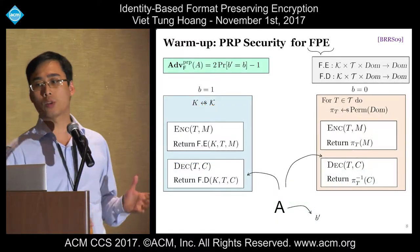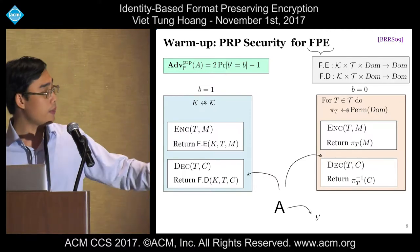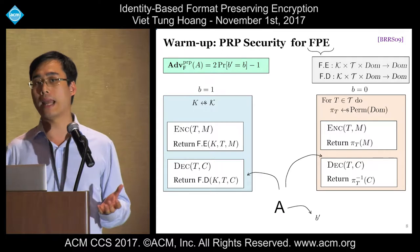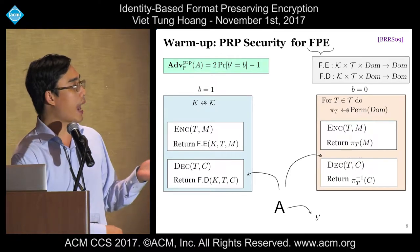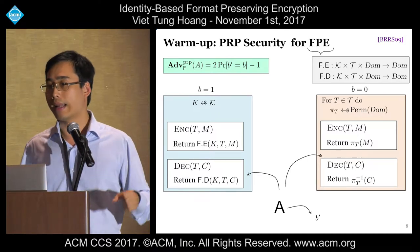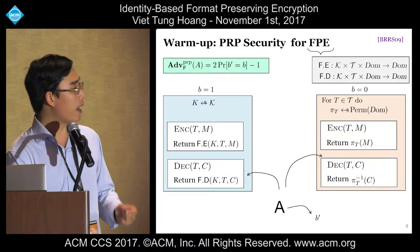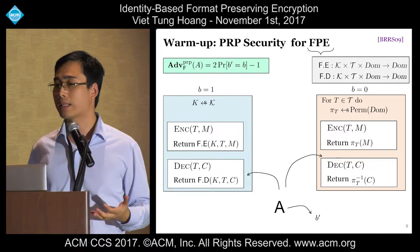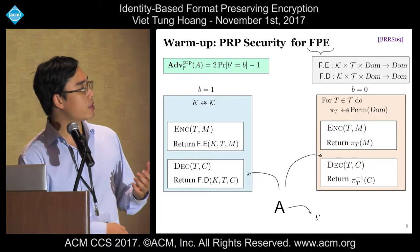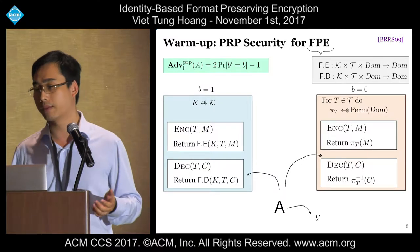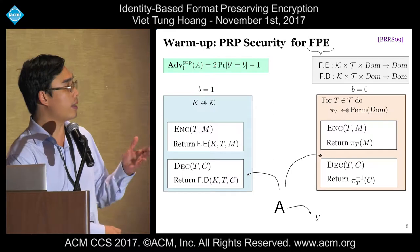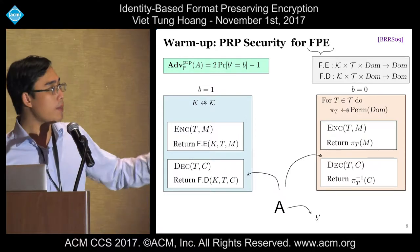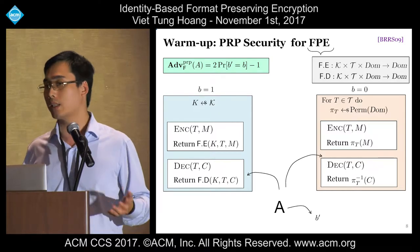Let me now move on to the security notions of IBFPE, beginning with the key recovery notion. Under this notion, the adversary is given encryption and decryption oracles as usual, but also a challenge oracle to indicate weak identities whose sub-keys it wants to recover, and an exposure oracle to indicate identities it wants to compromise to obtain corresponding sub-keys. At the end, the adversary outputs an identity I and a sub-key J. It wins if I is in the challenge list and J is indeed the sub-key of I. To prevent trivial winning, we prohibit querying the exposure oracle and the challenge oracle with the same identity.